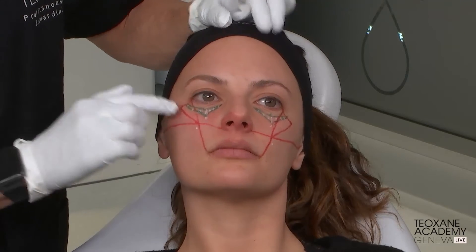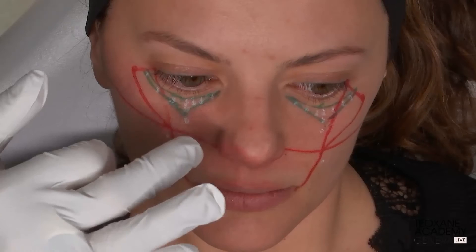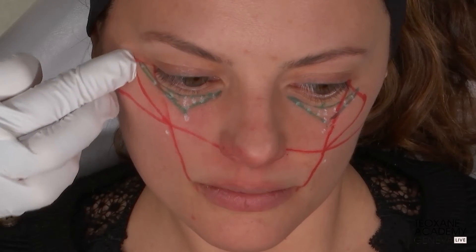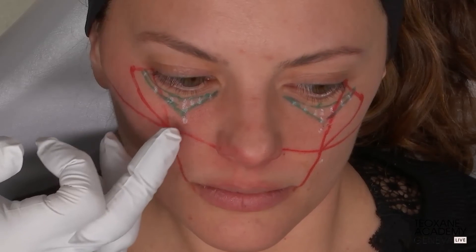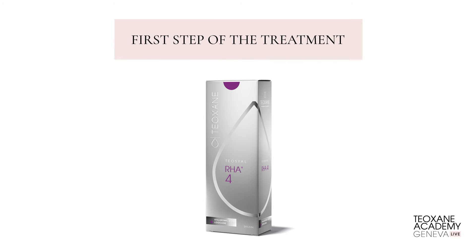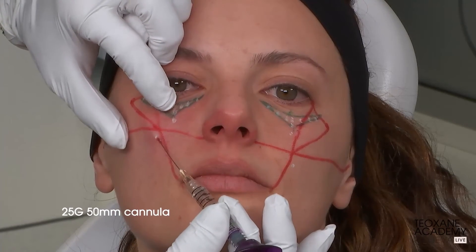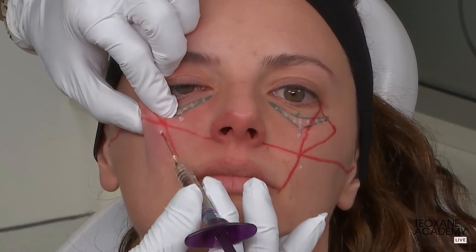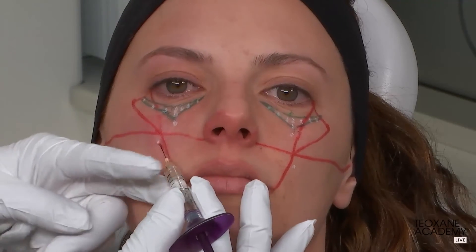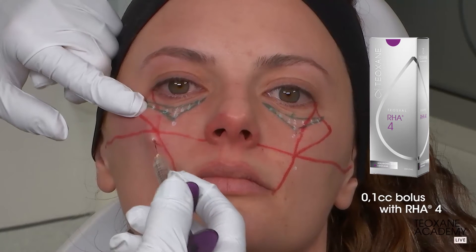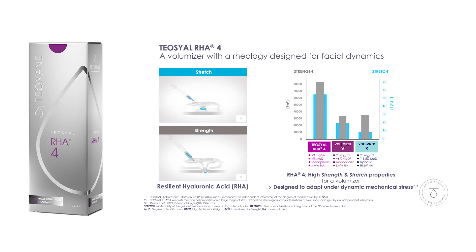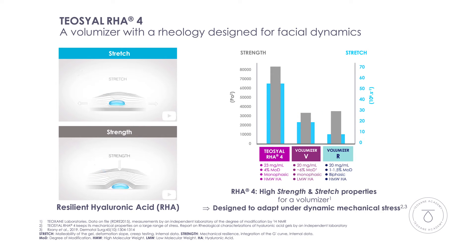The G-point is a specific location where I use a specific G-prime to achieve stretching of the facial ligaments, lifting the tissue rather than just filling. The cannula is a 20-gauge, 50-millimeter cannula that glides under the superficial dermis — a simple, virtually painless plane. I inject with RHA4, which has enough G-prime and stretch for this very dynamic area with the orbicularis muscle.